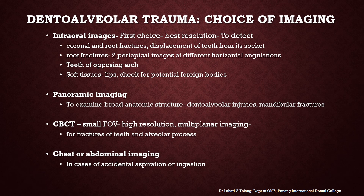The choice of imaging in cases of dental alveolar trauma should depend on severity and the area of involvement. Intraoral images are the first choice, having the best resolution, and are specially used to detect coronal and root fractures, displacement of tooth from its socket. For root fractures, periapical images at two different horizontal angulations are very useful. Images of teeth of the opposing arch should also be taken to rule out fractures there. For soft tissues like lips and cheeks, if there are potential foreign bodies embedded due to a fall, mud, sand, or even a tooth fragment may be embedded within the soft tissue.